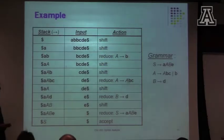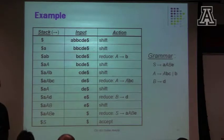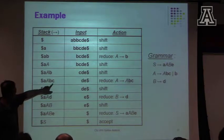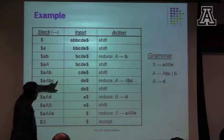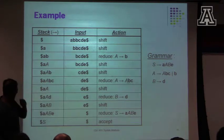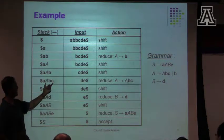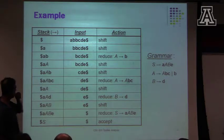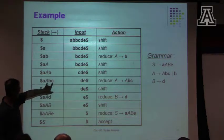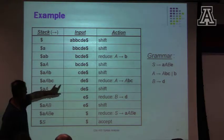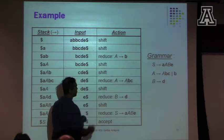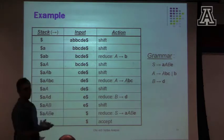Today everyone's wide awake — I'm pleasantly surprised, it's early in the morning. So here we are. C got shifted, and now my magic table says, hey, look, you have a handle here. The table says that's a handle — that's the right-hand side of this production here. So reduce using A goes to A, B, C.